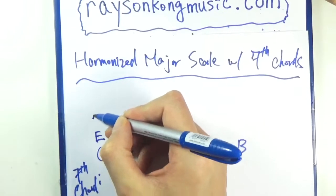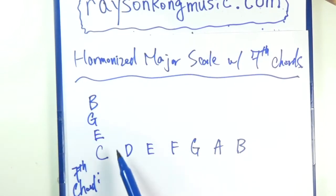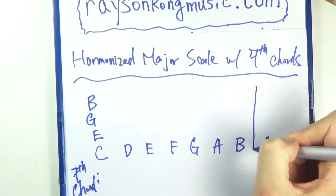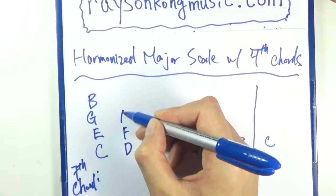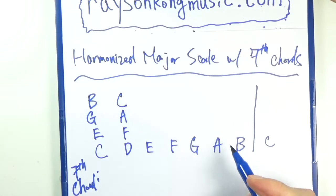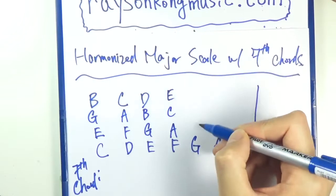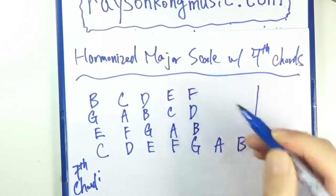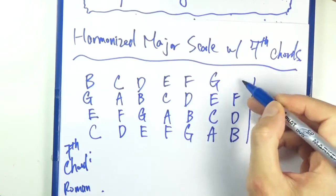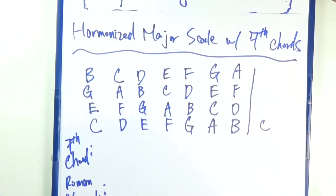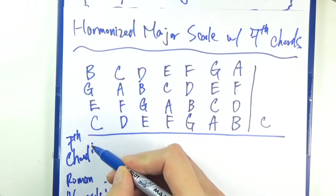Per chord: C E G B. Quick recap - we're stacking thirds, picking notes from the scale a third apart. D, so that should be D F A C. E: E G B D. F: F A C E. G: G B D F. A: A C E G, and then B D F A. That's the first step, stacking in thirds. Next up, let's check the quality of each chord.